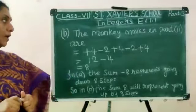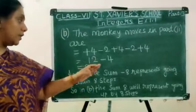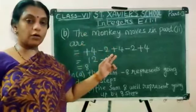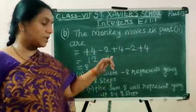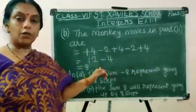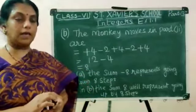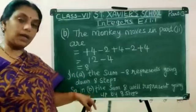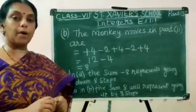The next one is part 2 B. The monkey moves: first it goes up, so it is plus 4 minus 2, then plus 4 minus 2. It made 5 jumps. So 4 appears 3 times: 4 times 3 is 12, and 2 appears 2 times: 2 times 2 is 4. So 12 minus 4 is 8. In A, the sum minus 8 represents going down 8 steps. So in B, the sum 8 represents going up by 8 steps.